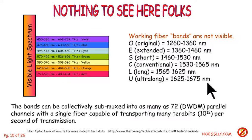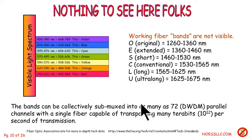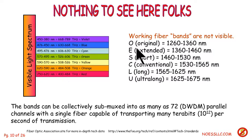We're talking in wavelengths now, not frequencies. Almost nobody ever talks about the frequencies over here in fiber, and we seldom talk about them in radio systems either, though we certainly do in wire systems. Each one of these bands can be collectively sub-multiplexed into as many as 72 in dense wavelength division multiplexing — these parallel channels on a single fiber. So you can send terabits of information if you consider that you can pulse each one of these. It gets really quite impressive.